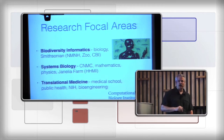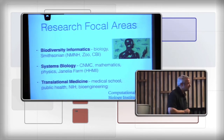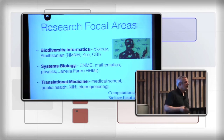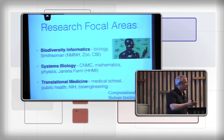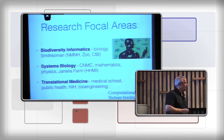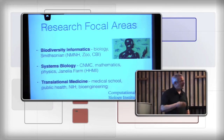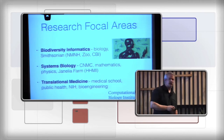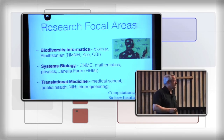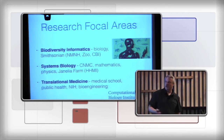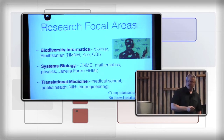At the Computational Biology Institute at George Washington, we focused on three particular areas. The first is biodiversity informatics. We're interested in that because a couple of us do natural history studies. I've actually done a lot of work here in Chile, working on freshwater crayfish and freshwater crabs, especially in Patagonia, doing phylogenetics and taxonomic work. I'm a research associate at the Smithsonian in the division of invertebrate zoology, and we have great connections there.